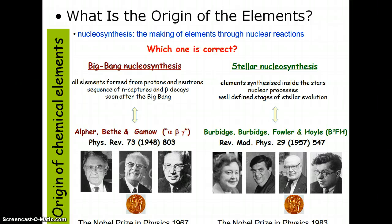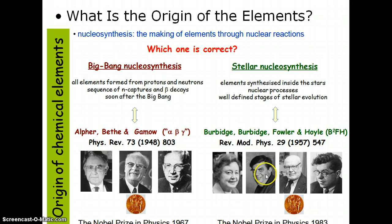Nucleosynthesis is the making of elements through nuclear reactions — we're talking about fusion. Big Bang nucleosynthesis states that all elements formed from protons and neutrons in a sequence of neutron captures and beta decays soon after the Big Bang. This was proposed by Alpher, Bethe, and Gamow — alpha, beta, gamma — and they won the Nobel Prize in physics in 1967. Then in 1983, another group won the Nobel Prize for showing that elements were synthesized inside stars at well-defined stages of stellar evolution.